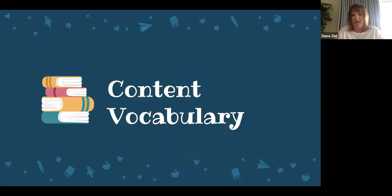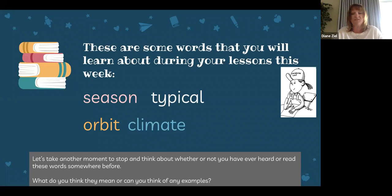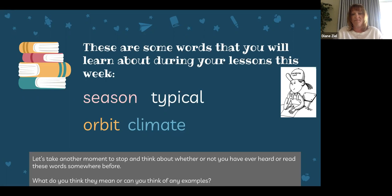Now let's take a look at some of the content vocabulary for this week. These are some of the important content words for this week's lessons. You will have the words season, typical, orbit, and climate — which may sound familiar because we've thought about that word before. Take a moment before we move on and think about whether or not you've heard, read, or seen these words somewhere before. What do you think they mean and can you give any examples?